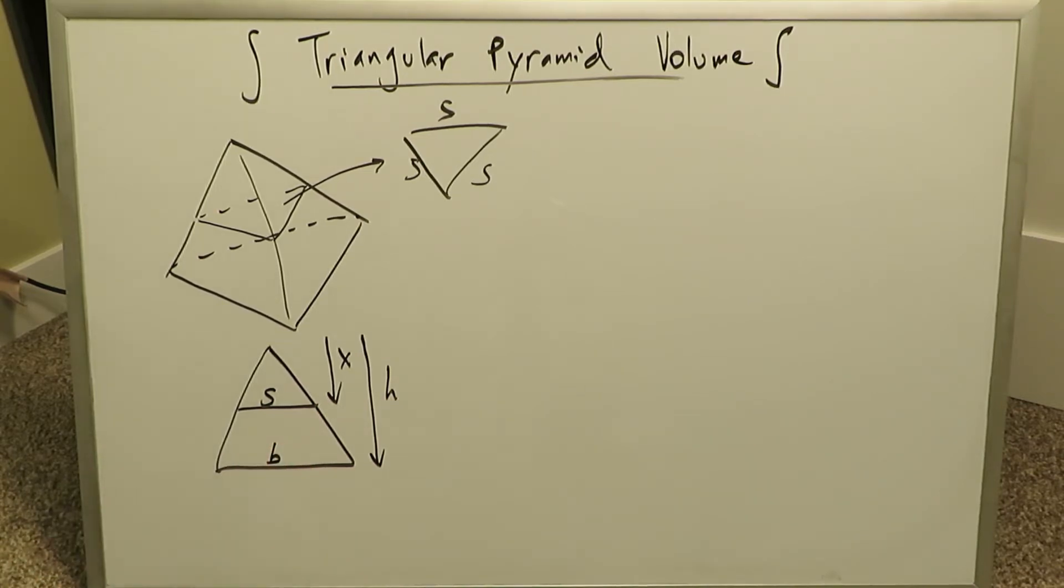If you do a ratio over here, it generates everything you need in terms of the side determination. X over S, the height over its corresponding base is equal to the height of the overall triangle over its base, and you can solve for S over here.